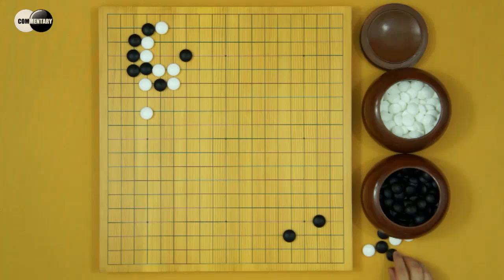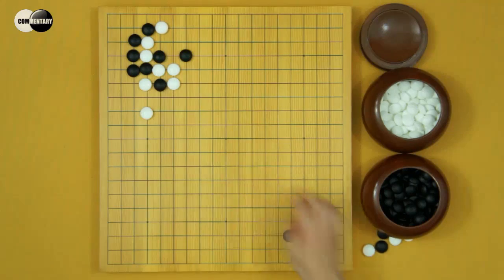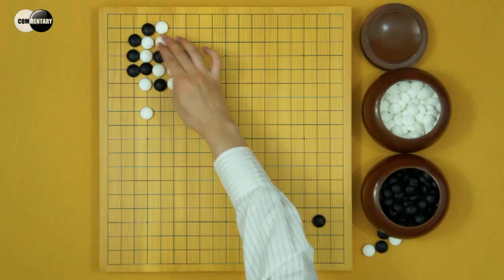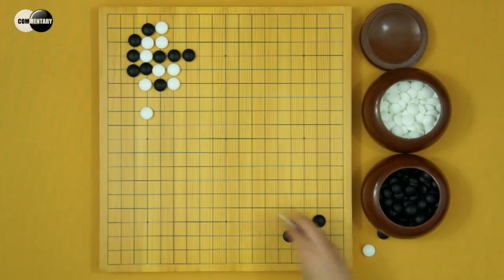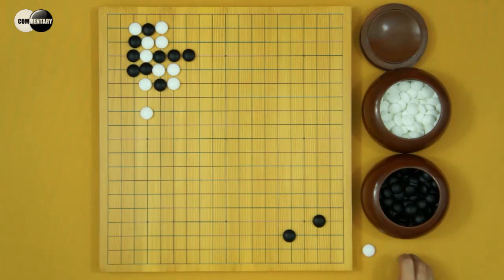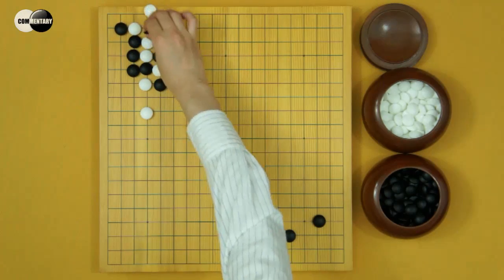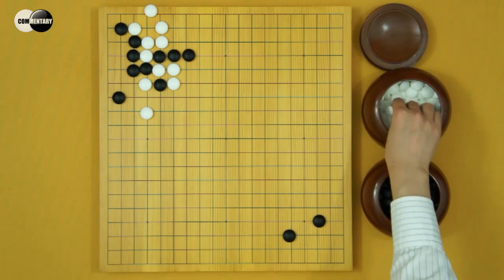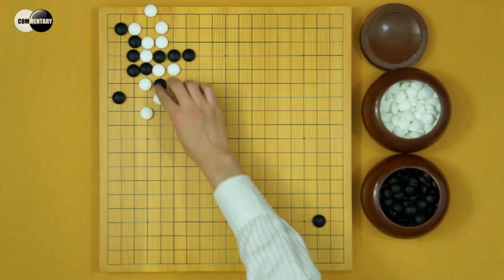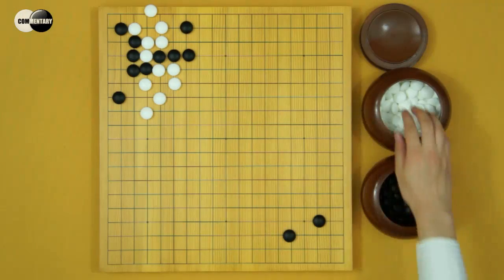White hane. Black atari. White connects. Black connects. White atari. Black counter atari. White captures. Black keima. White captures. Black jumps.